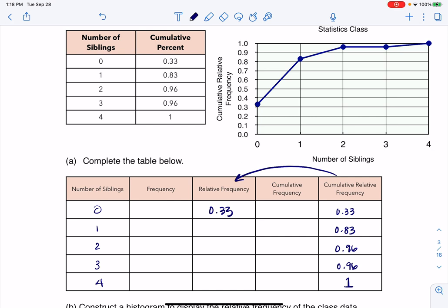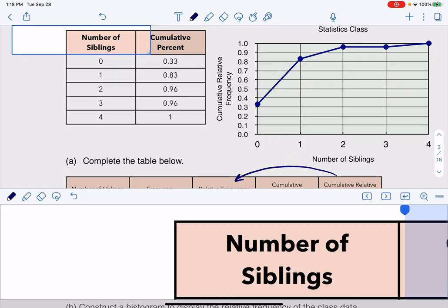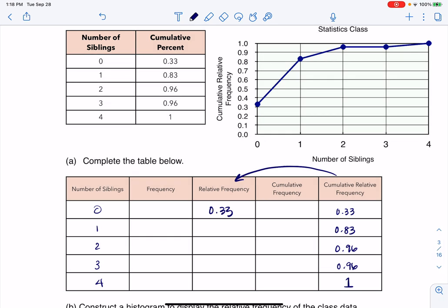So what that would mean is I would start with my 33% here, right? I would have dragged that number over. But I'm going to subtract. So what I want to do is I want to take a look at the difference between 83% and 33%. And that would have been 50%, and that's the number that's going to go there. And then I want to subtract 83 from 96. So if I think of 96 minus 83, that's going to be 13%. That's going to go here. 96 minus 96 is 0. And then 1 minus 96 is 0.04.